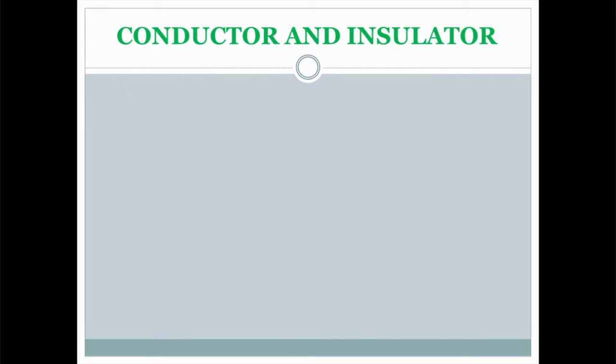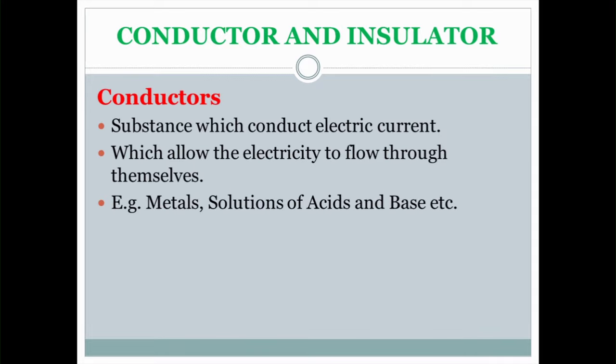You are already familiar with these two terms: conductor and insulator. A conductor is a substance which conducts electric current — in other words, it allows electricity to flow through itself. All metals are good conductors of electricity. Examples include metals and solutions of acids and bases.